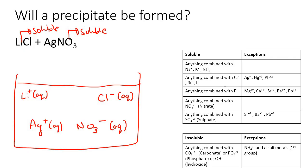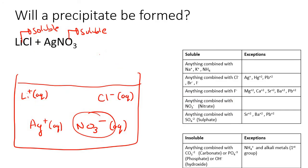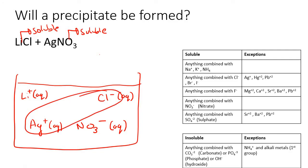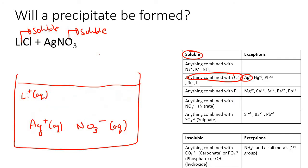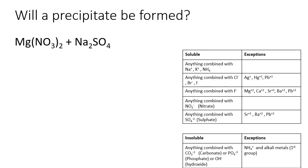We know Li⁺ and Cl⁻ going back together is soluble — they won't stay. What about Li⁺ and NO3⁻ forming lithium nitrate? All nitrates are soluble, so they won't combine. Now Ag⁺ and Cl⁻: anything combined with Cl⁻ is soluble except when combined with Ag. We do have Ag, so these two go together and stay together — the water molecules cannot pull them apart. They form a solid precipitate. Yes, a precipitate forms.